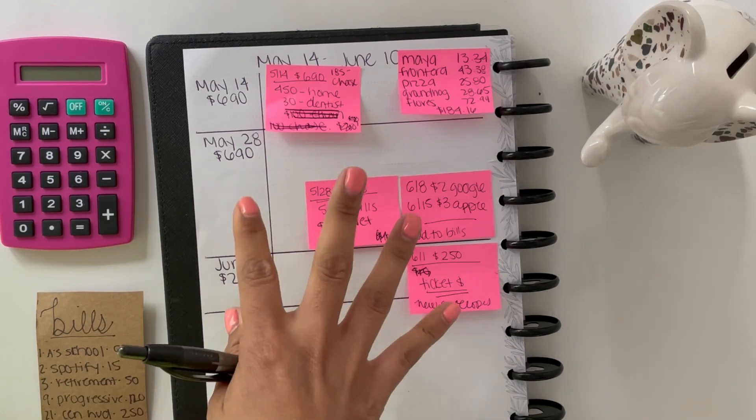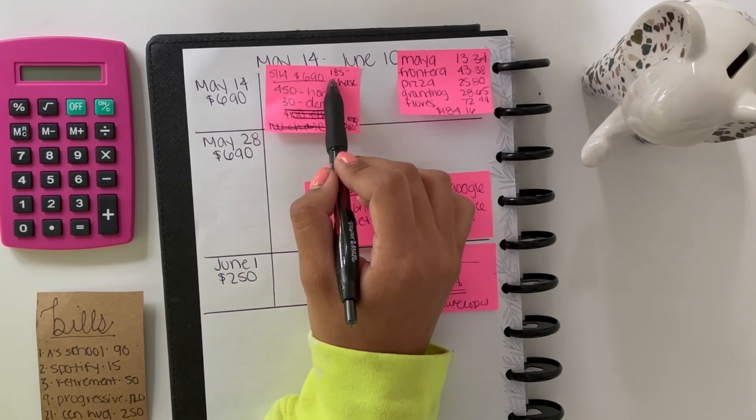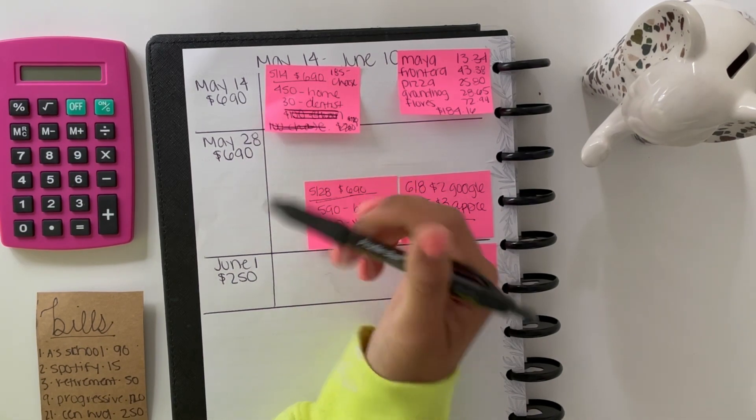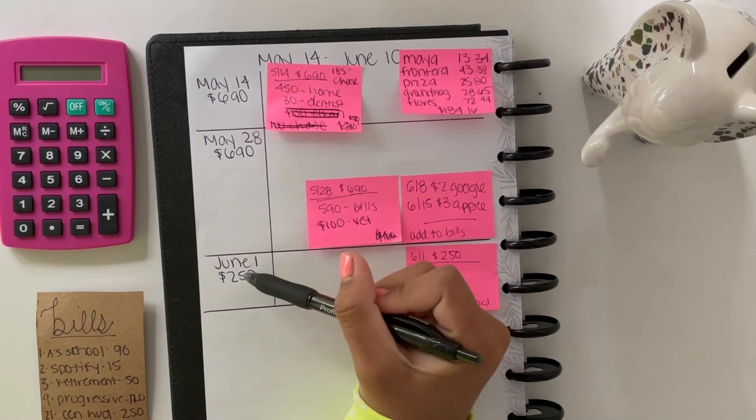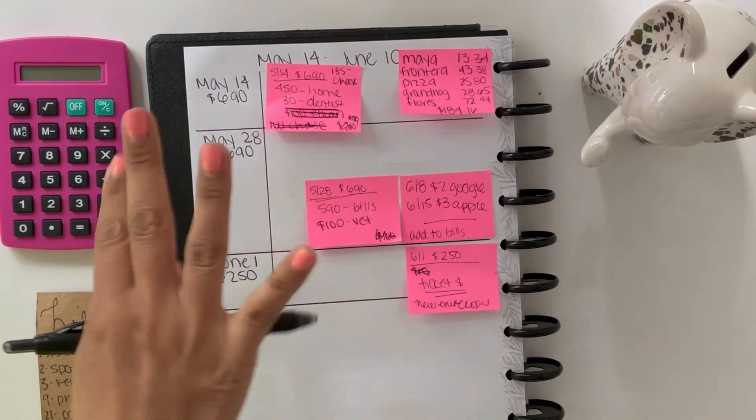I'm posting this mid-May but this is for June. I get paid $690, so that's May 14th and then May 28th. And then June 1st is my alimony payment. I get paid $250 on the first every month.